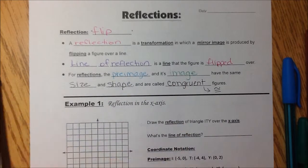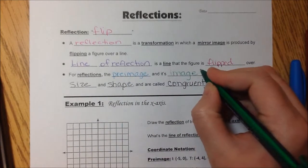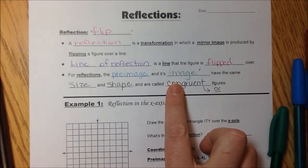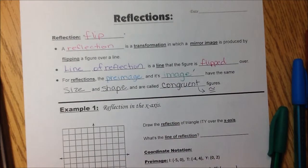And remember, to find our image, we're all going to include that prime symbol. Our image always has the prime. That's how we know when we're looking on the graph which is the image and which is the pre-image. Alright, let's do one.